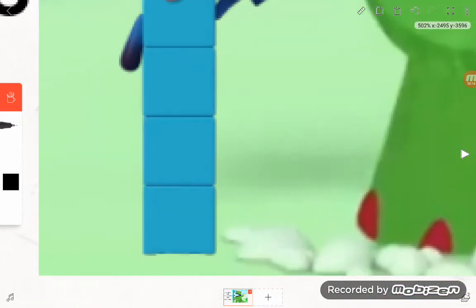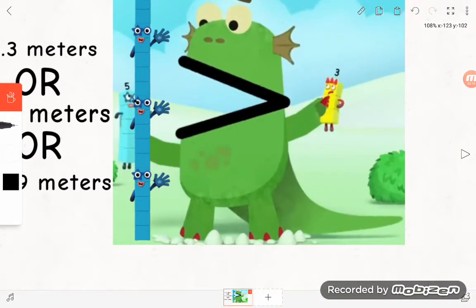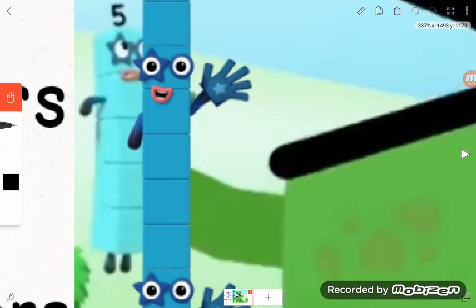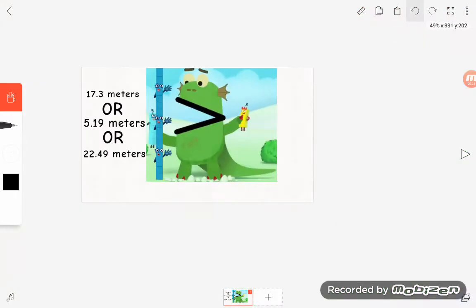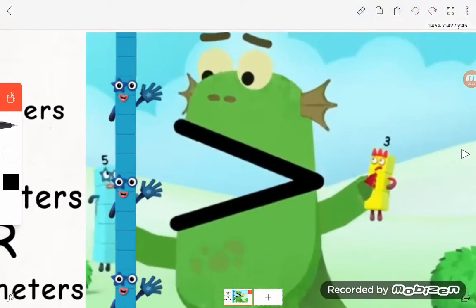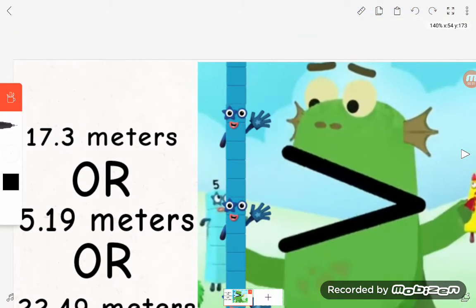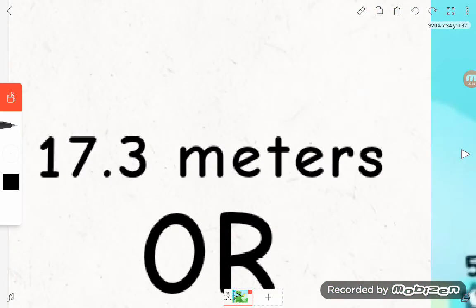Right, one block equals one meter. So usually I count like five because he's five meters, and obviously I have to count. There we got five, ten, fifteen, and then I think this is something point three meters.